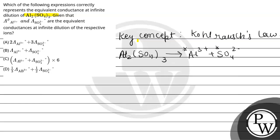So it is λ⁰ of Al³⁺ and SO₄²⁻. So the equivalent conductance at infinite dilution, λ⁰ of Al₂(SO₄)₃, will be equal to λ⁰ of Al³⁺ plus λ⁰ of SO₄²⁻.